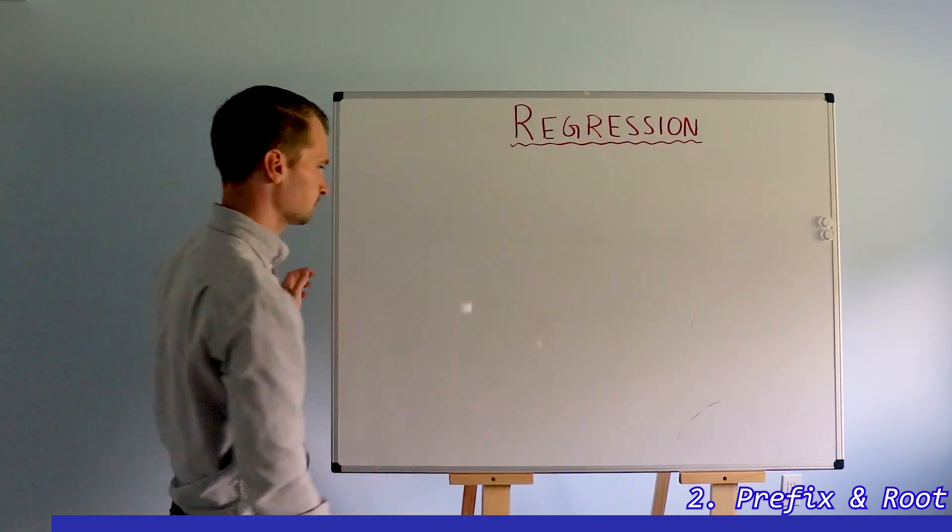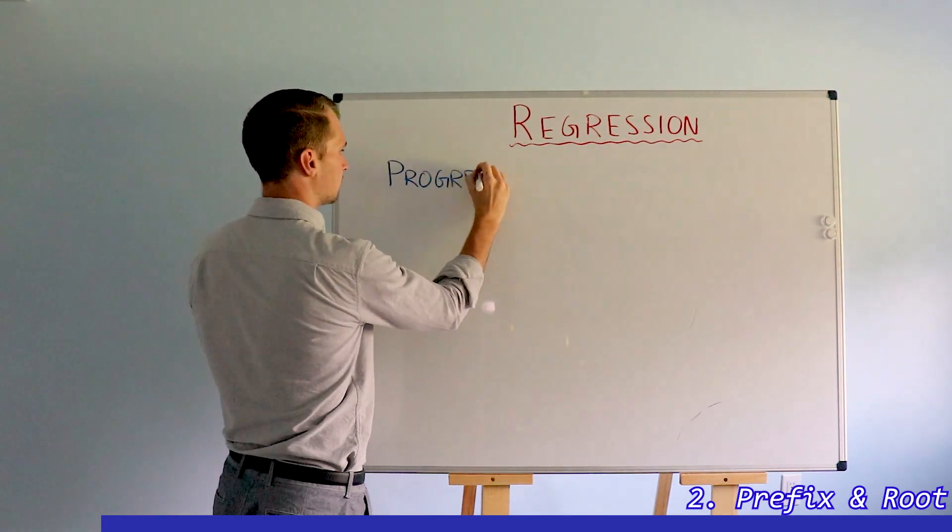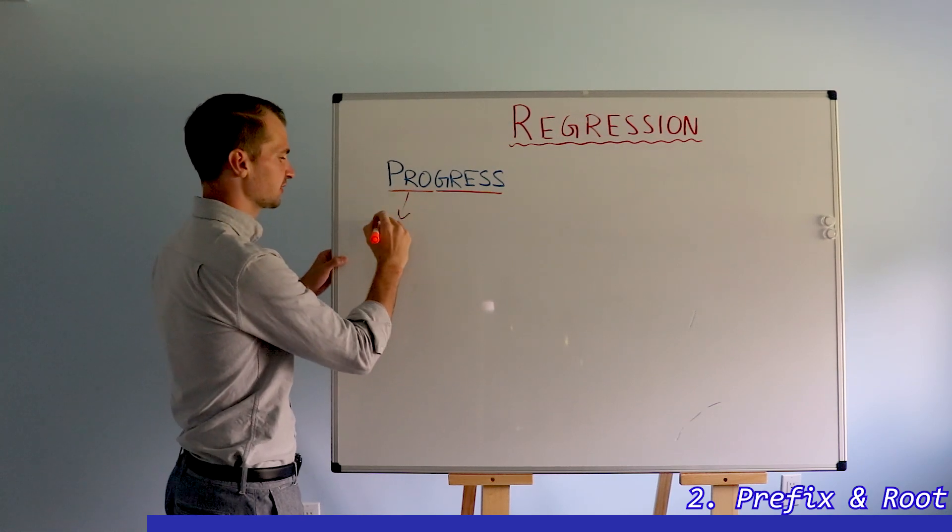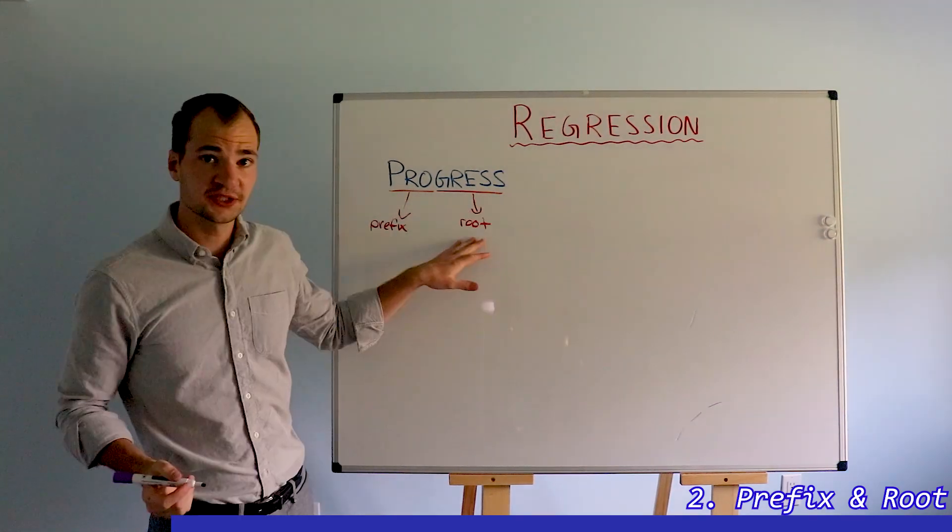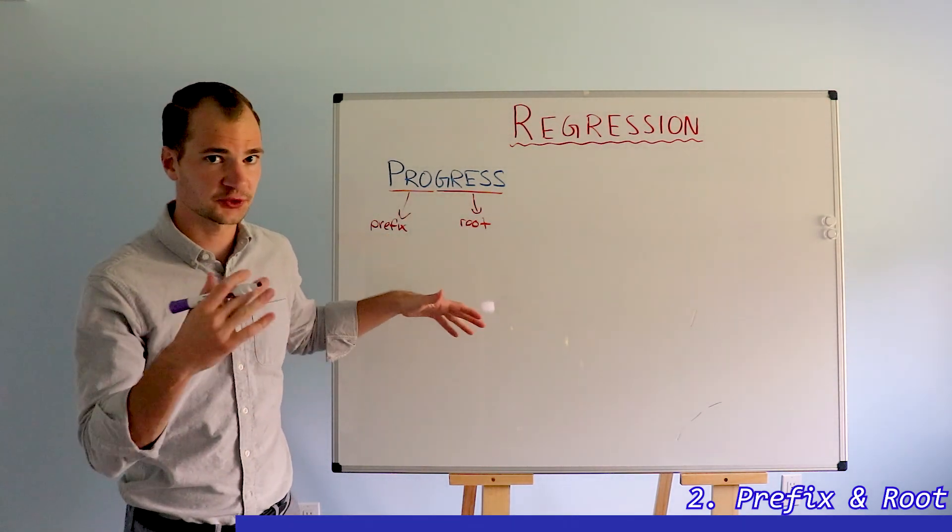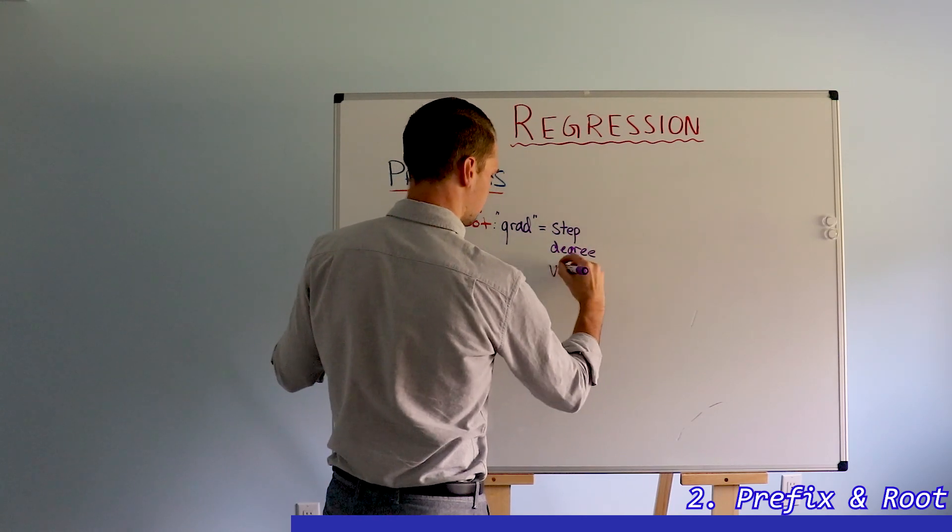To understand the word regress, let's look at a more common everyday familiar word, progress. It is made up of two terms. First is the prefix, second is the root. This root, grass, progress is actually the same root as a gradient, and that's grad. And it means a step, a degree, or a walk.